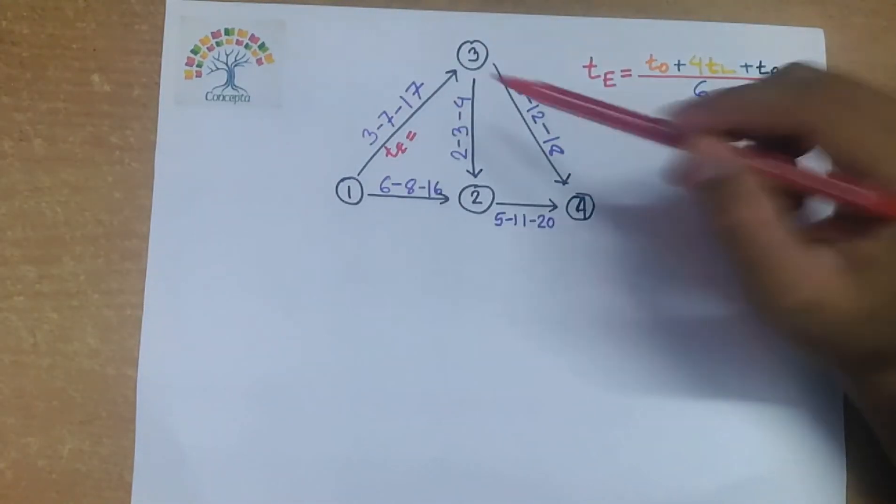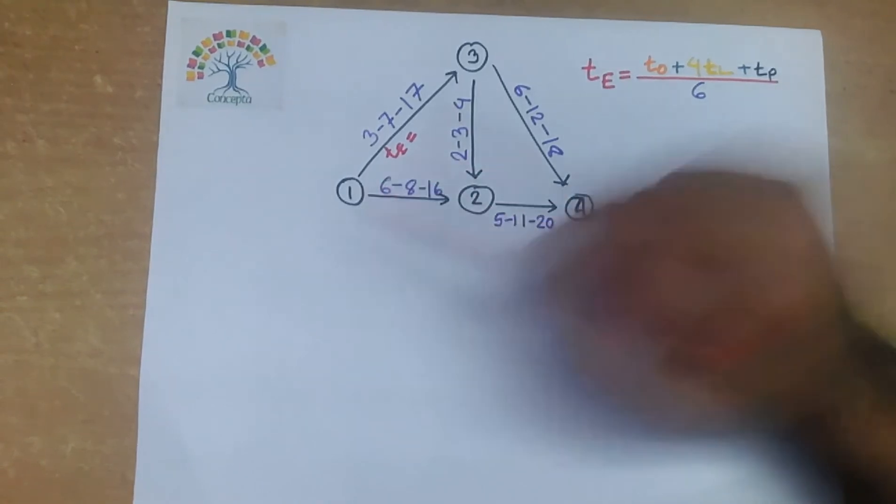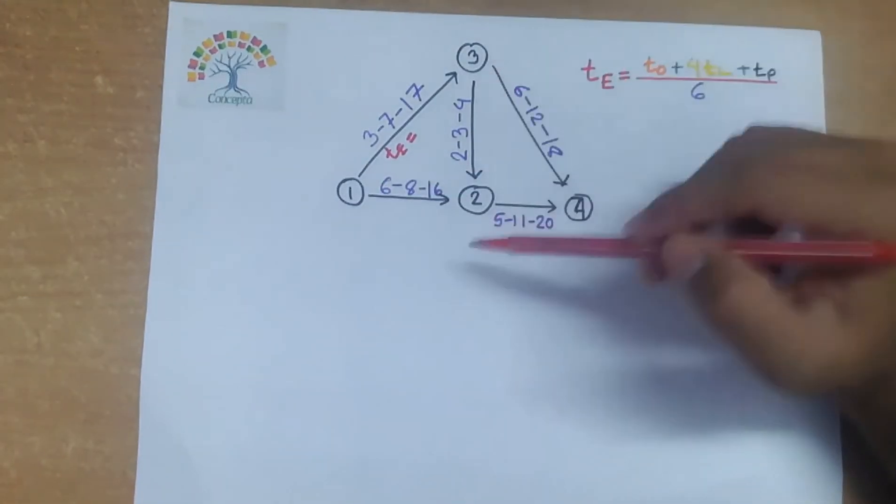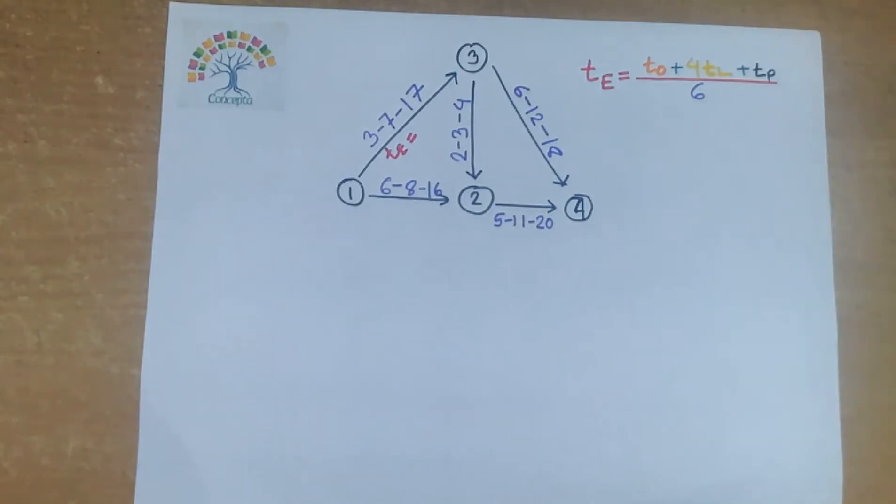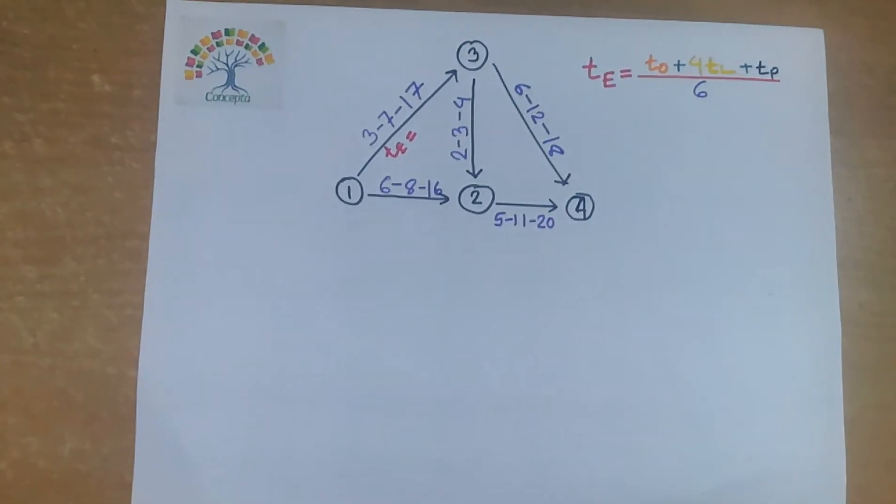which a project is completed following this path like 1-3 is a path, 1-2 is a path, 3-2 is a path, 3-4 is a path, 2-4 is a path. Full form of PERT is Program Evaluation and Review Technique, which deals with how a work can be completed with